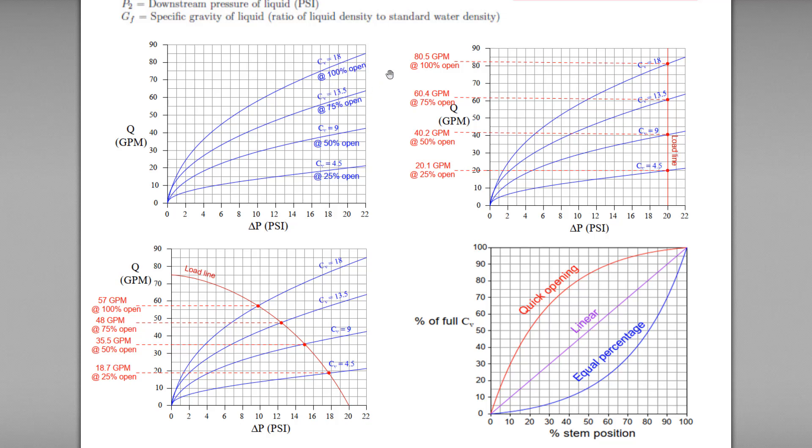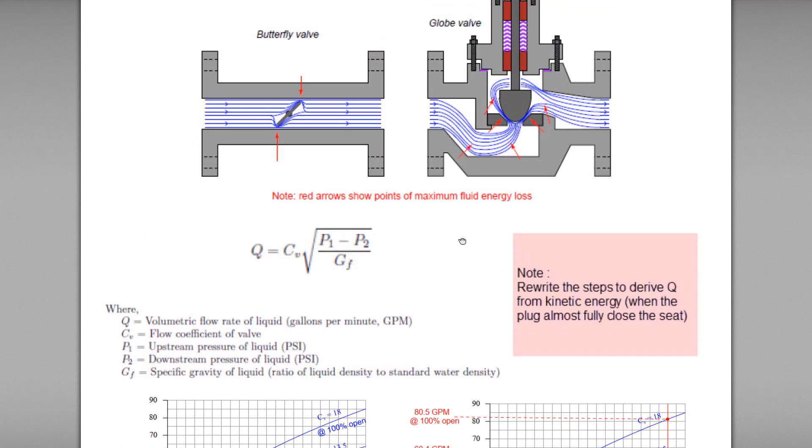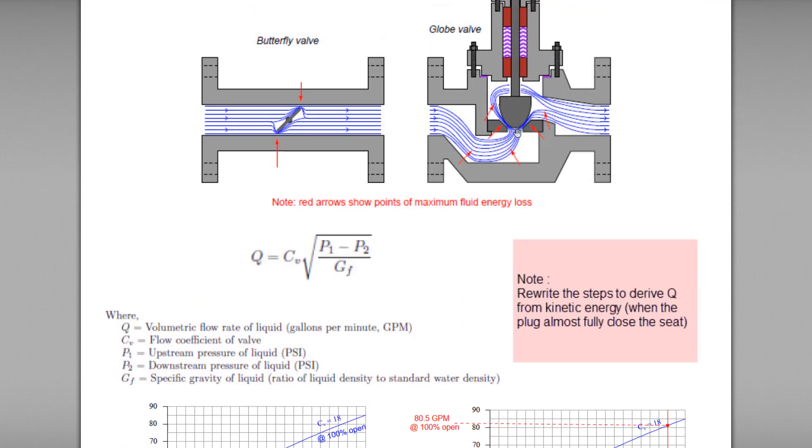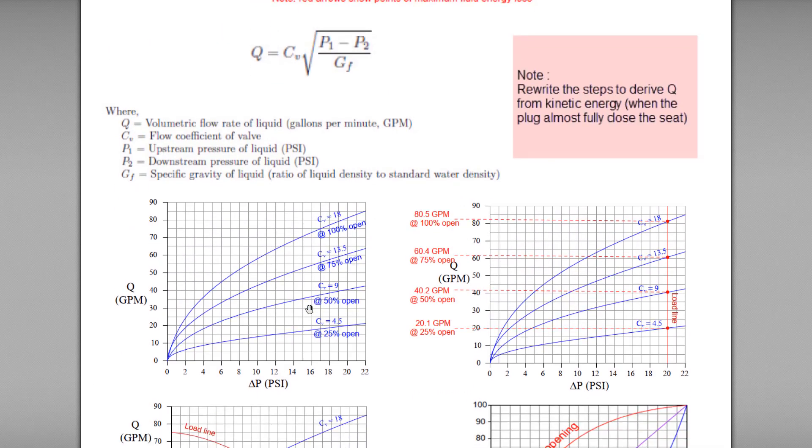In order to make our life easier, to make us easier to understand the concept of CV, we can roughly assume that CV or flow coefficient as a valve seat area plus the valve opening height.